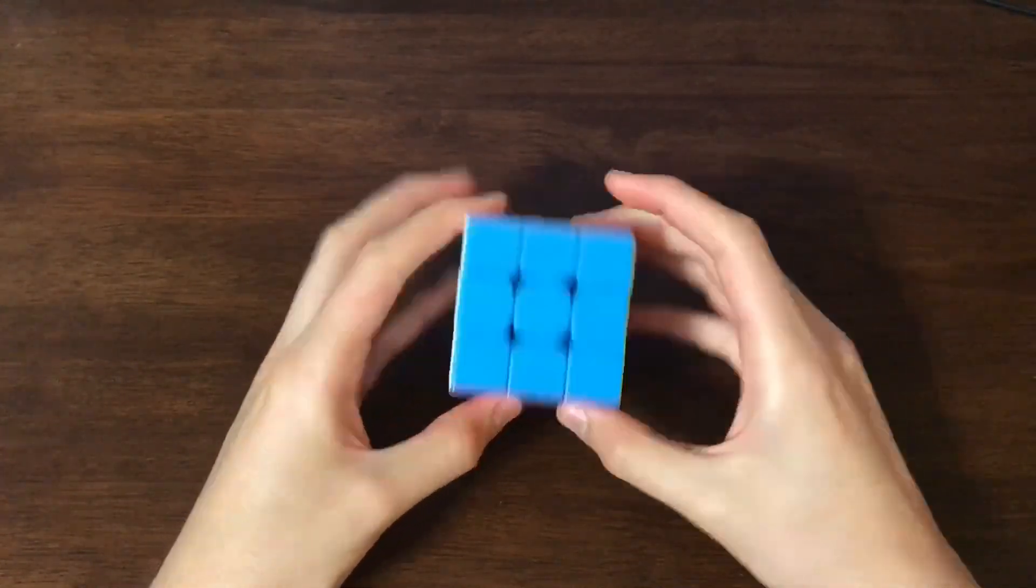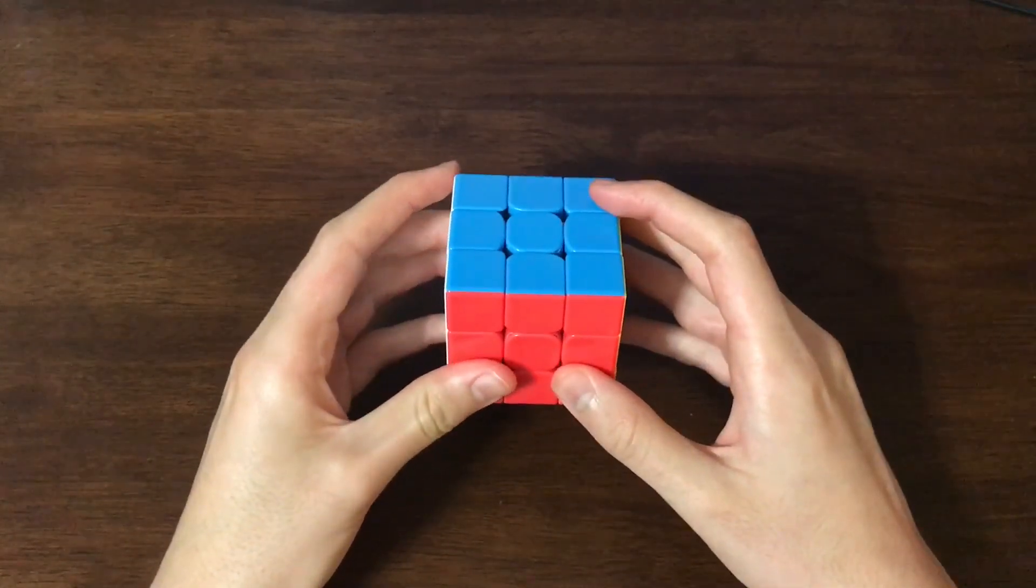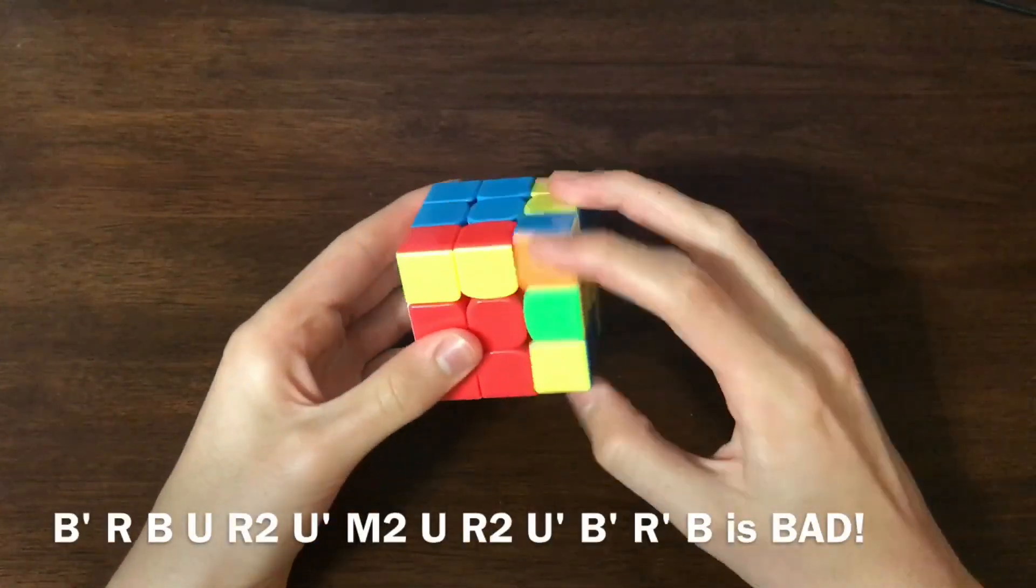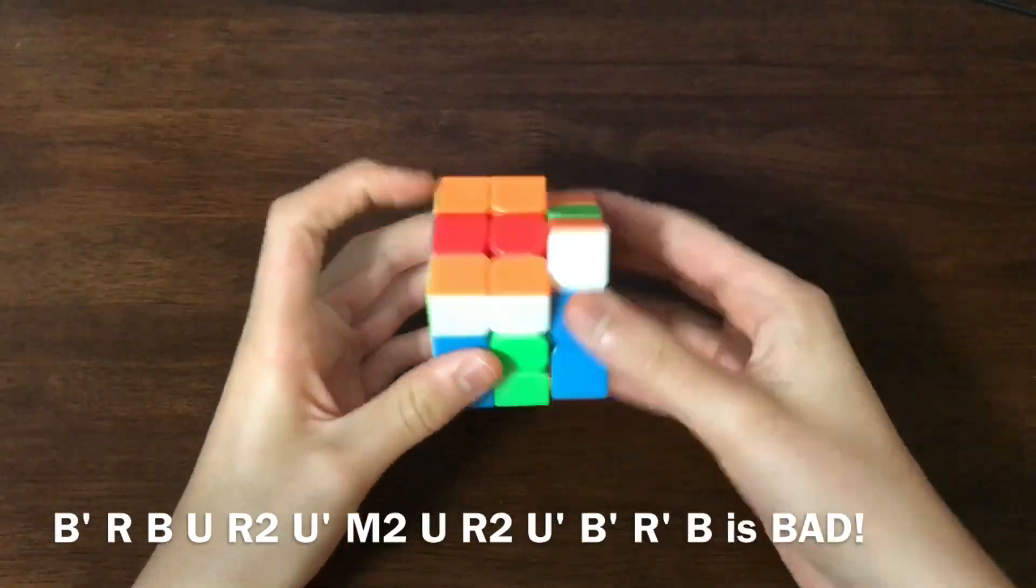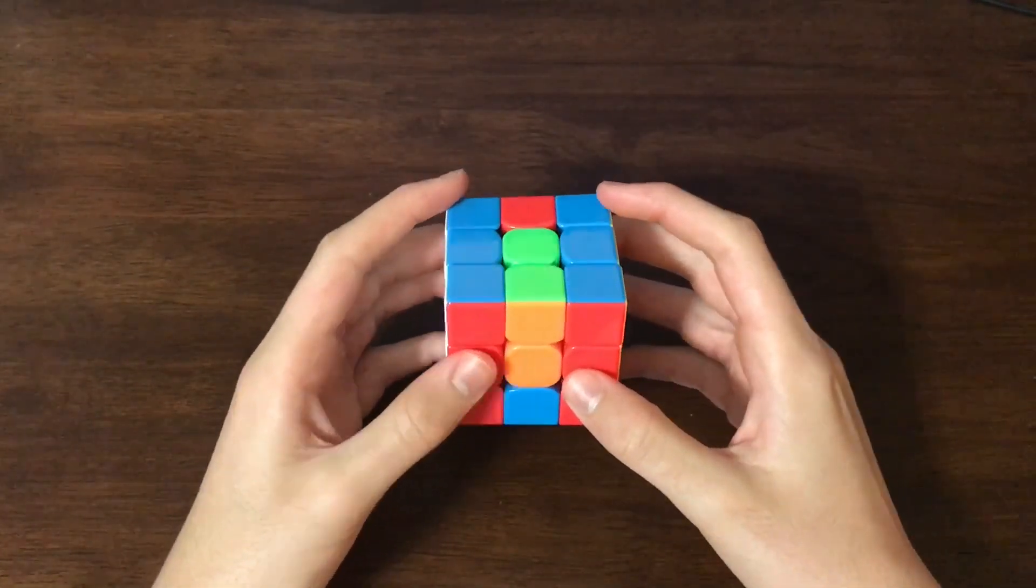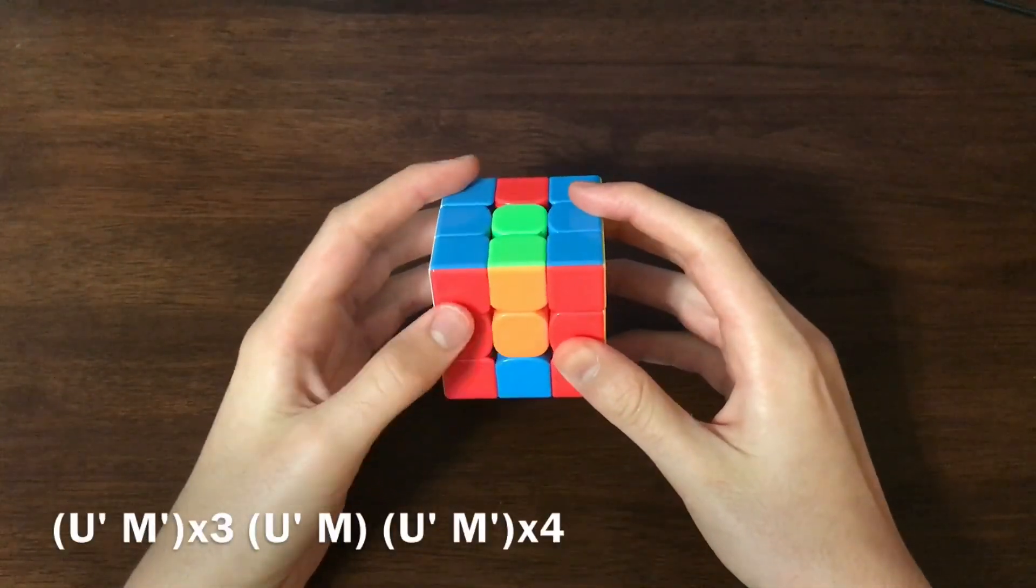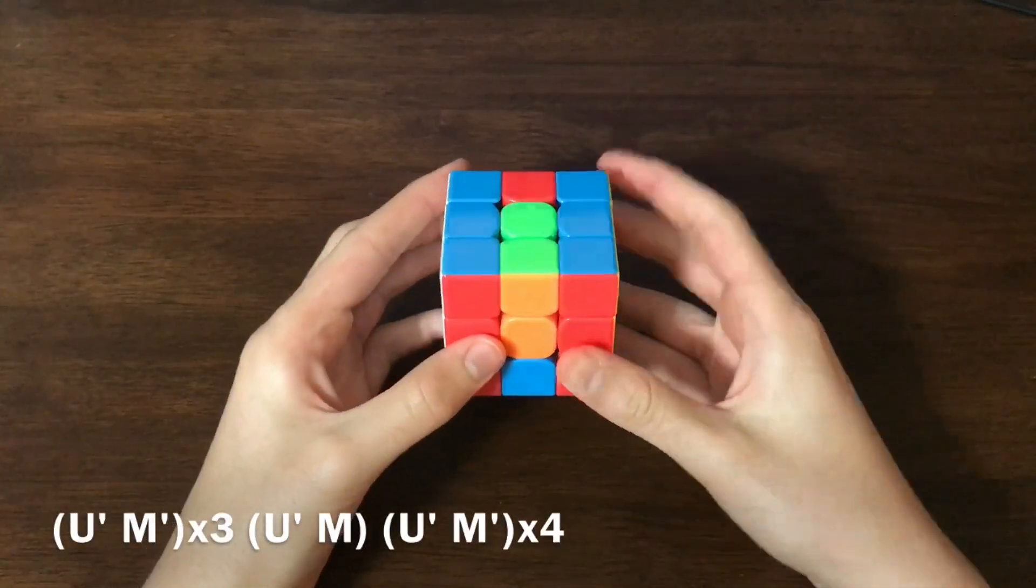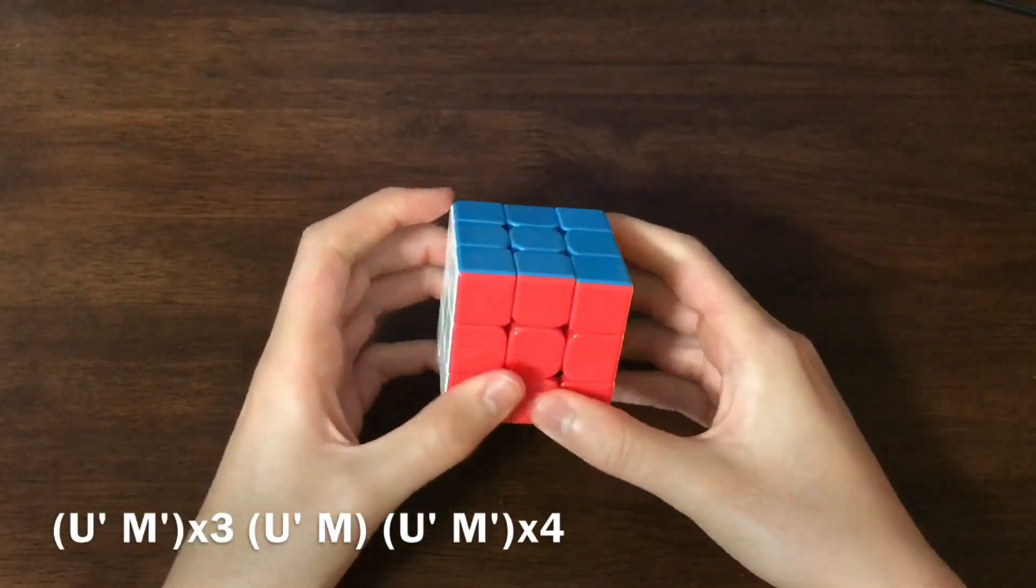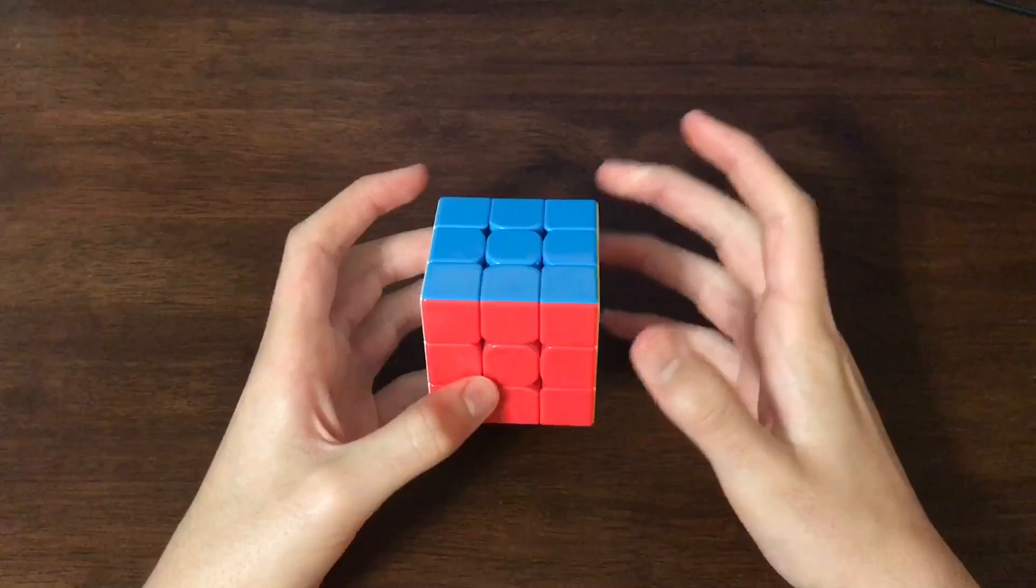Now, the next case is BU, or Q in Speffz. And the one that Noah Arthurs teaches is this alg. And that's a lot of moves, and it's also very slow. And the one I would recommend is on screen right now. And it's really nice, because it's all MU, and you can do it super fast, like that,